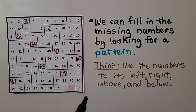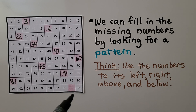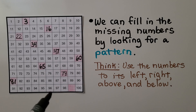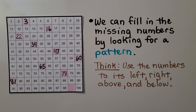We have one last missing number. It must have a 9 in the 1s place — we have all the 90s here: 96, 97, 98. If you said 99, you're right. So we can fill in the missing numbers by looking for a pattern.